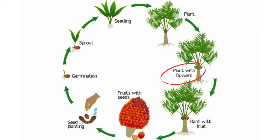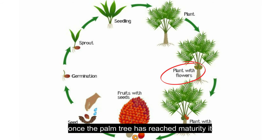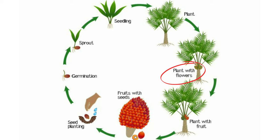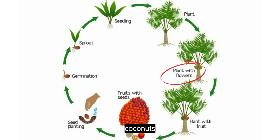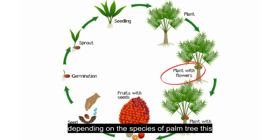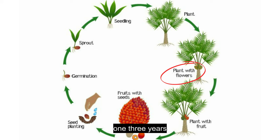Reproductive phase: once the palm tree has reached maturity, it will enter into its reproductive phase. During this time, the tree will produce flowers, which will eventually turn into fruits such as coconuts. Depending on the species of palm tree, this reproductive phase can last anywhere from one to three years.